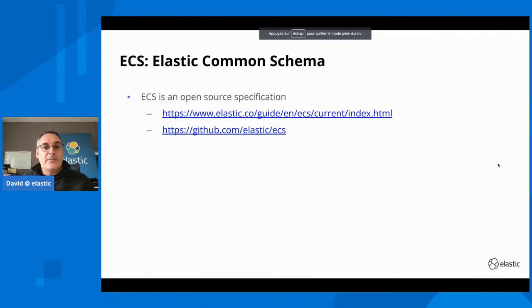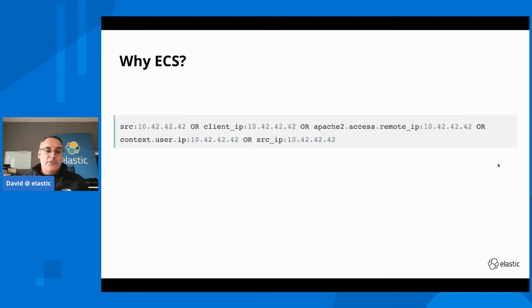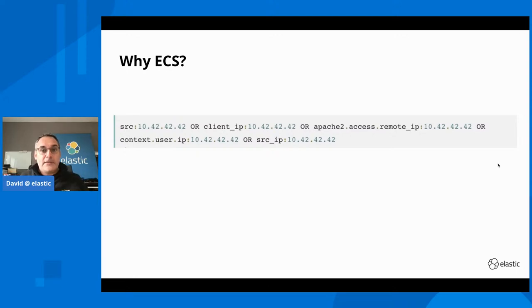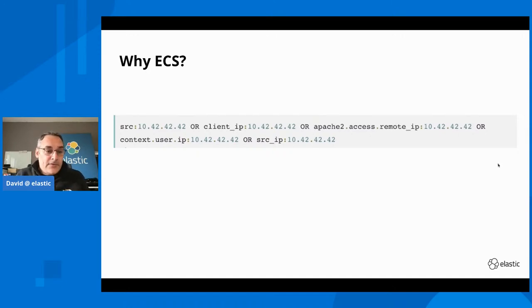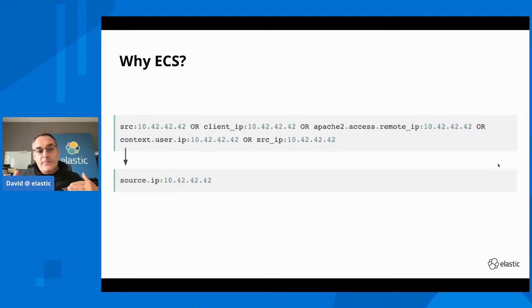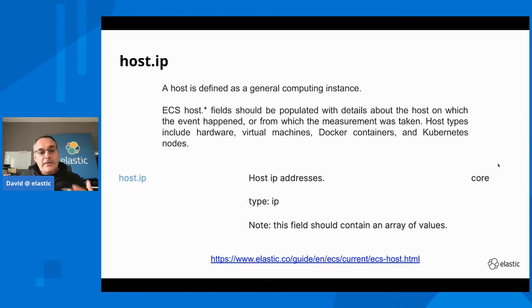ECS stands for the Elastic Common Schema. This is an open source specification available on GitHub, and there is also a reference guide we will see in a moment. The problem it solves: when you want to query your dataset in Elasticsearch and that dataset is coming from multiple sources — multiple Beats agents, Logstash, or your own application — when you search for the source address of an IP, you can end up with a query searching across multiple fields depending on the index. Instead, if you use a common specification, you can be sure that searching in the source.ip field will always find the information you are looking for. That makes it much easier to build your queries.